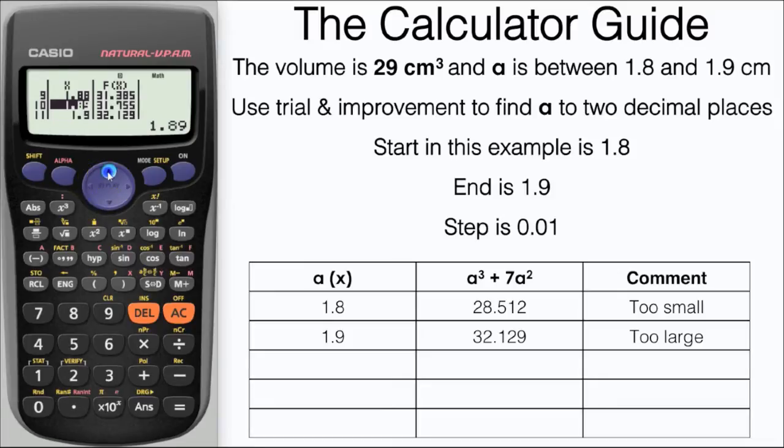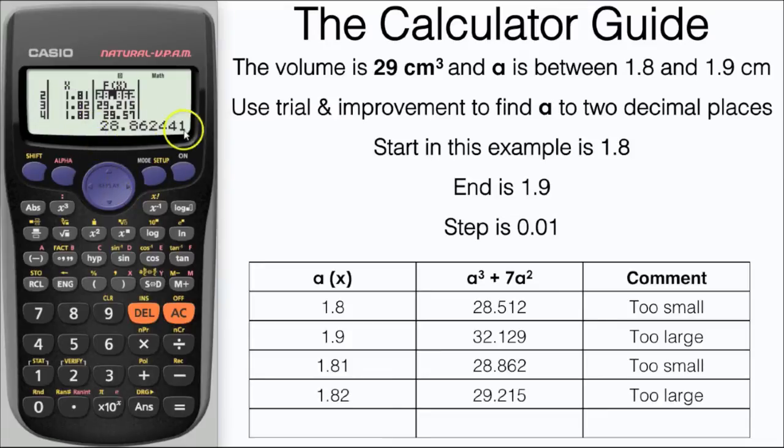The next bit is where you sometimes can get confused. We don't want the halfway value of 1.85, we want to look for where the f of X value is slightly less and then slightly more than 29. And here we have it, 1.81 and 1.82 which are the next values that we're going to write down into our table.